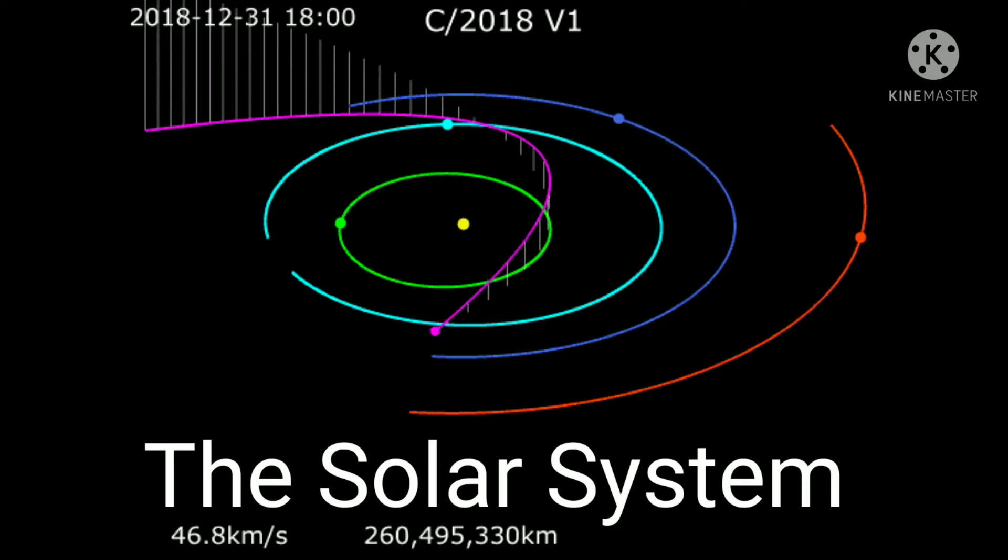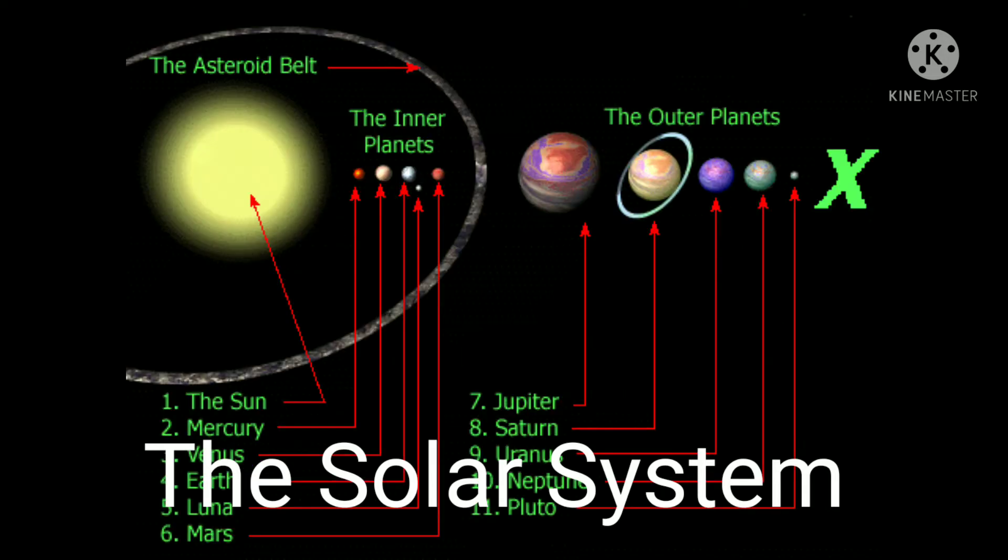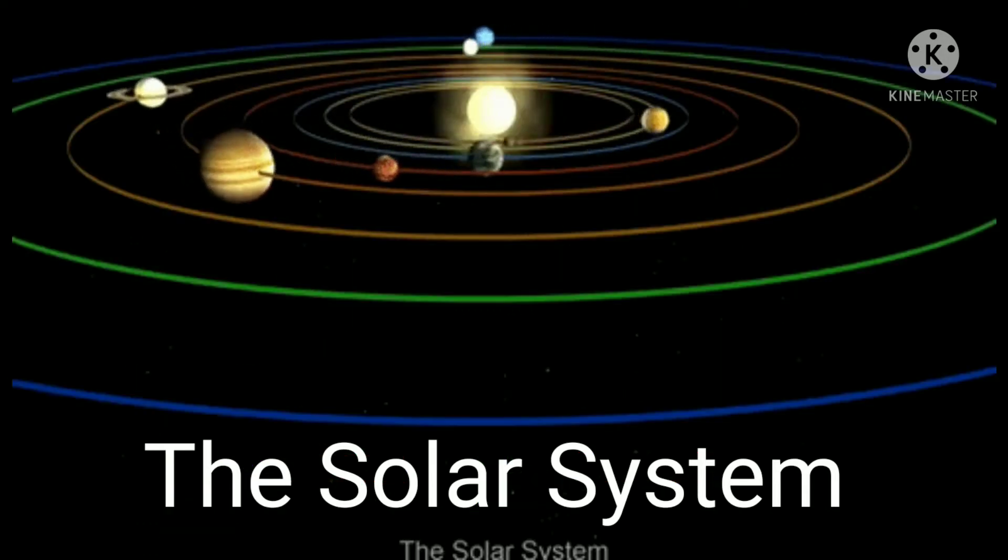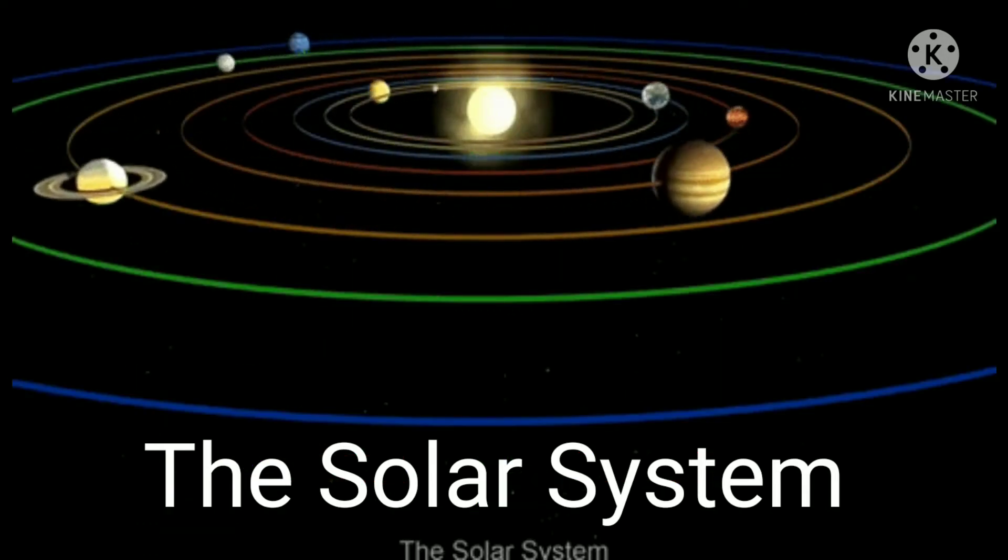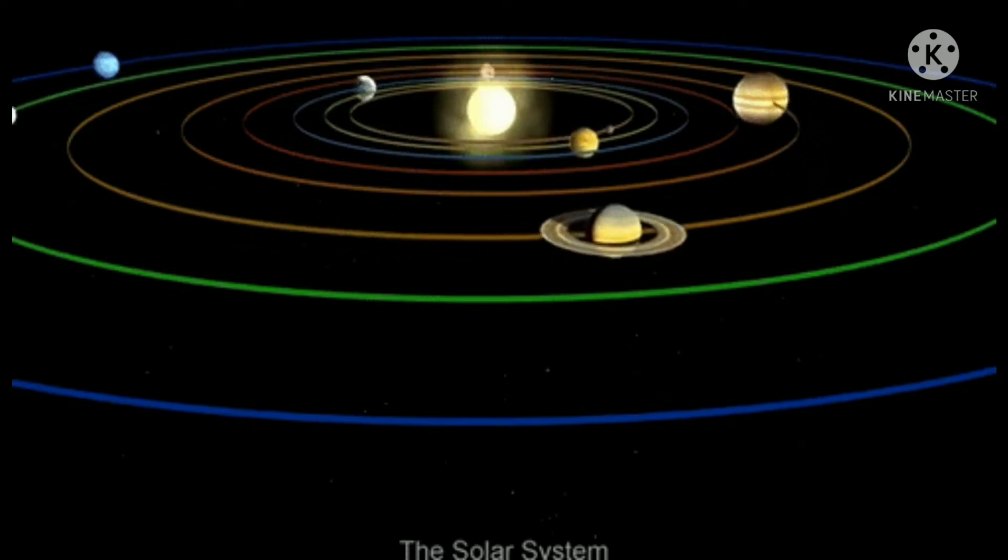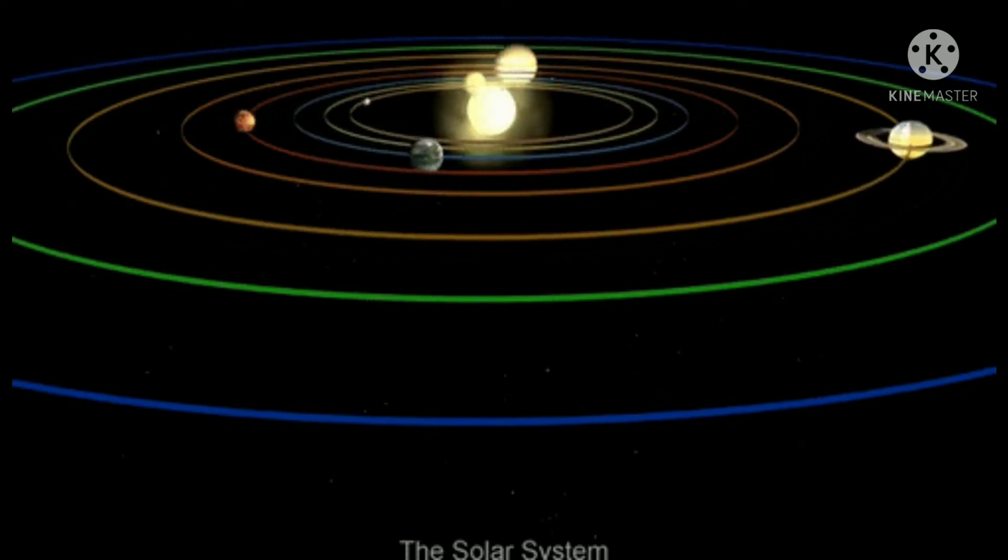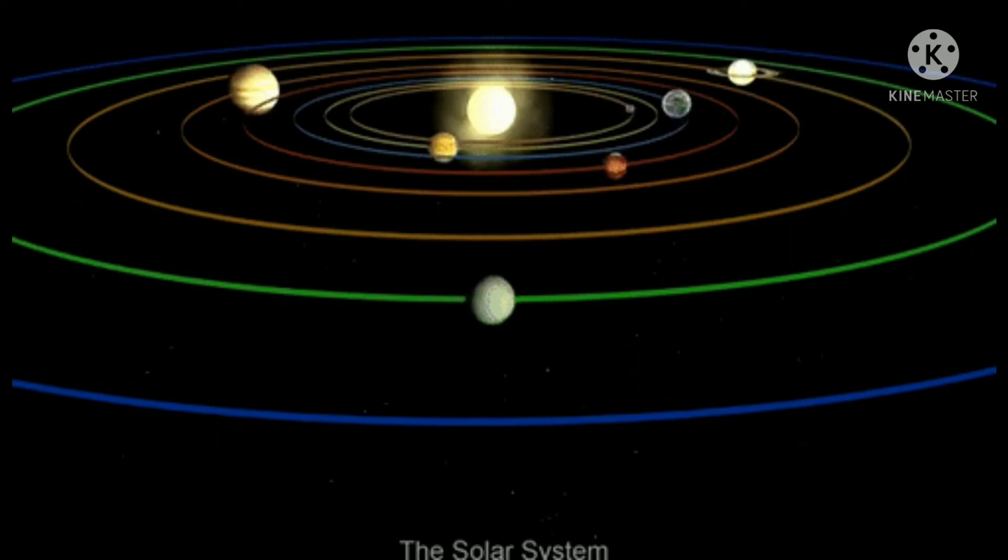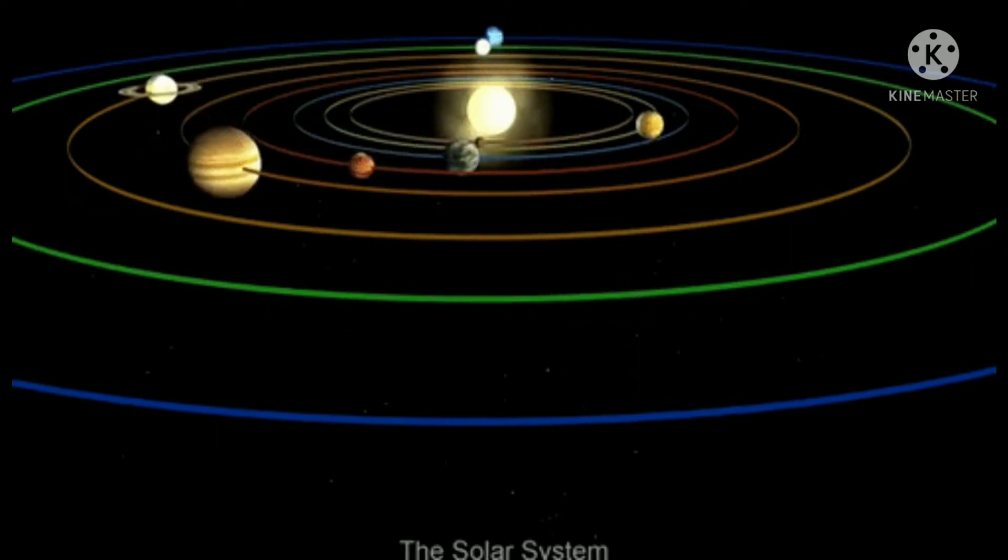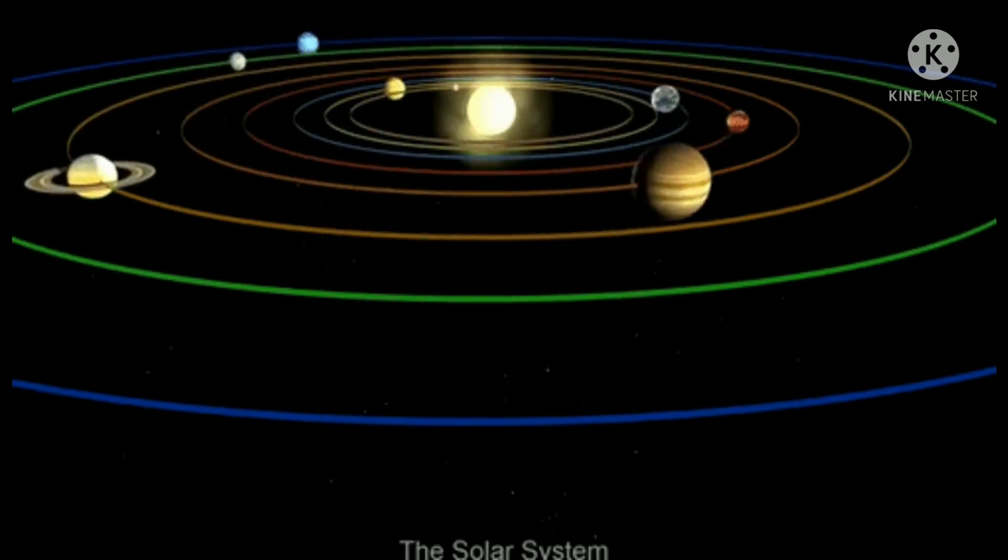Our solar system is the gravitationally bound system of the sun and the objects that orbit it. Of the bodies that orbit the sun directly, the largest are the four gas and ice giants and the four terrestrial planets.